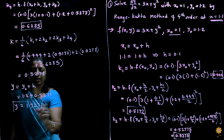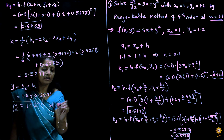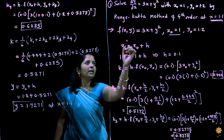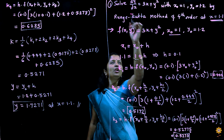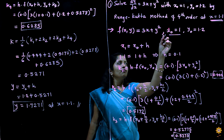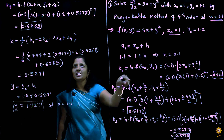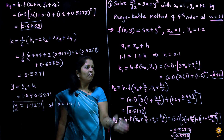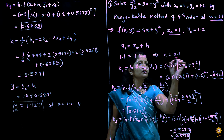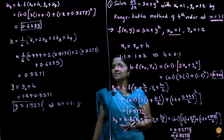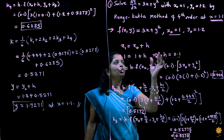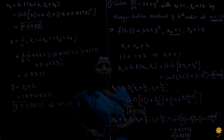So y equal to 1.7271 is the value of y at x equal to 1.1. In this way we can apply the Runge-Kutta method of fourth order to solve a first degree first order differential equation. This example involved only one iteration since x0 is 1 and h is 0.1. In the next lecture we will see an example requiring two iterations by the same method. Thank you.